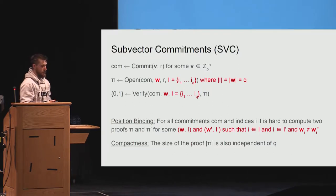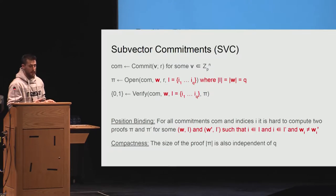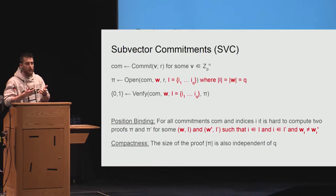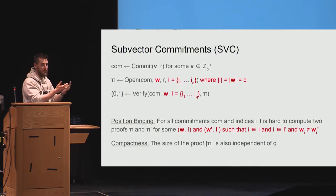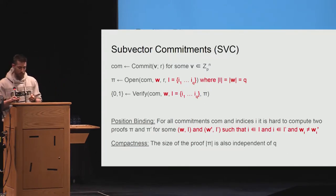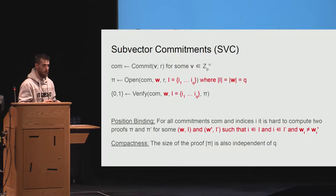The notion is essentially a refinement of position binding, which says that for any sets of openings referring to arbitrary sets of positions, if there exists one position common among the two, it has to have the same value. So we cannot give two different openings for a certain position, taking into account the additional sub-vector structure. Compactness is the crucial requirement: the proof size should be independent of Q, which is the size of the set of indices given to the opening.